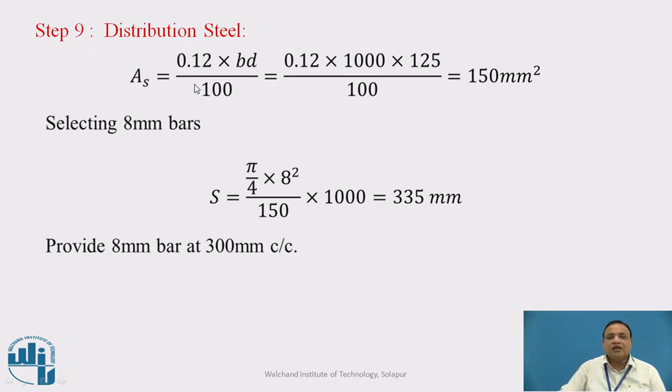Step 9: Distribution Steel. It is 0.12% of area of cross section, 0.12 by 100 times b times D. Here it is 0.12 times 1000 times 125 divided by 100, which equals 150 mm². Selecting 8 mm bars, spacing will be π/4 times 8 squared area of 1 bar divided by A_ST times 1000, which gives 335. Provide 8 mm diameter bars at 300 mm center to center. This is distribution steel along the longer direction, along 9 meter direction.